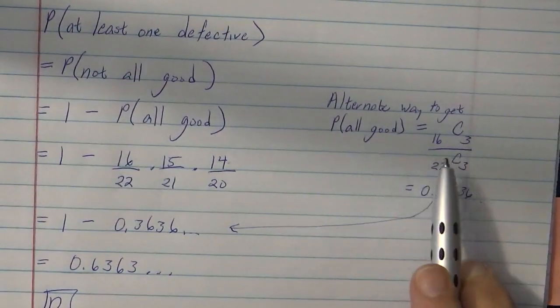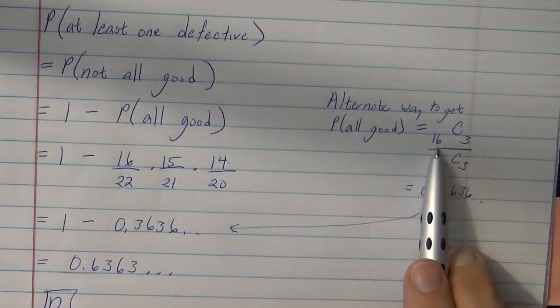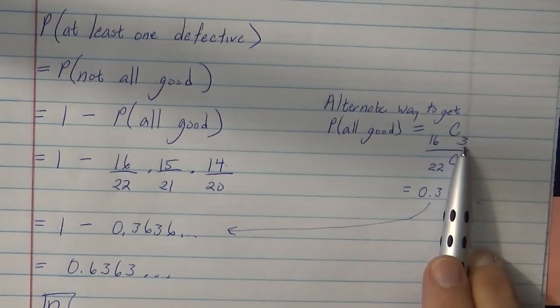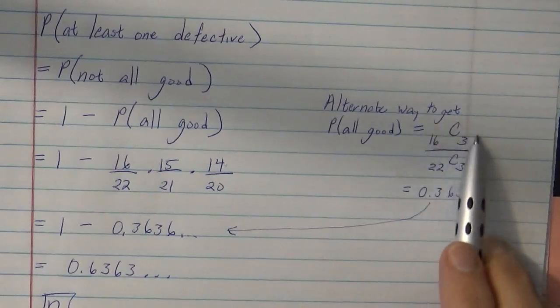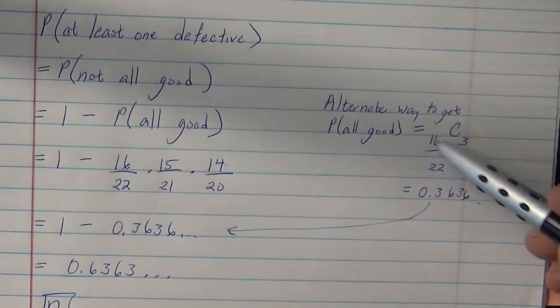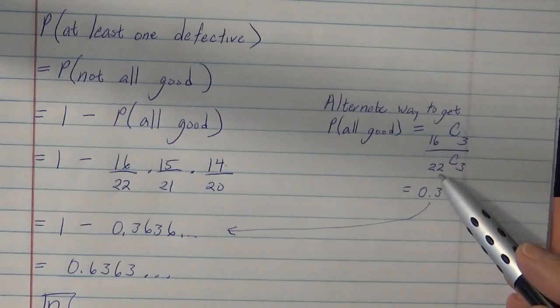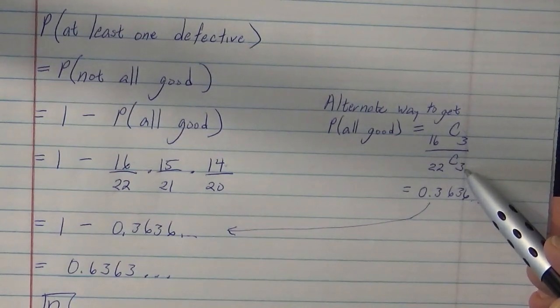the probability that they're all good, there are 16 good things, and you want to choose three of them. And so that's how many combinations that you want. And out of there are 22 total things, and you want to choose three of them.